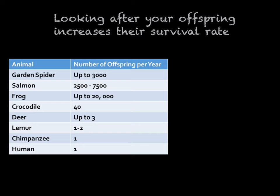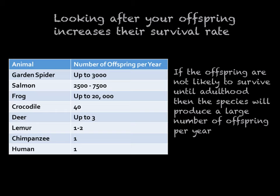Looking after your offspring increases their survival rate. Garden spiders have a large number of offspring per year; however, only a very small percentage of these will survive into adulthood. As we go down the table, we see an increasingly smaller number of offspring, with chimpanzees and humans on average only having one offspring per year — this offspring, however, is very likely to survive until adulthood. This links to parenting behaviour, where garden spiders provide no parenting behaviour, whereas chimpanzees and humans nurture their offspring for many years.